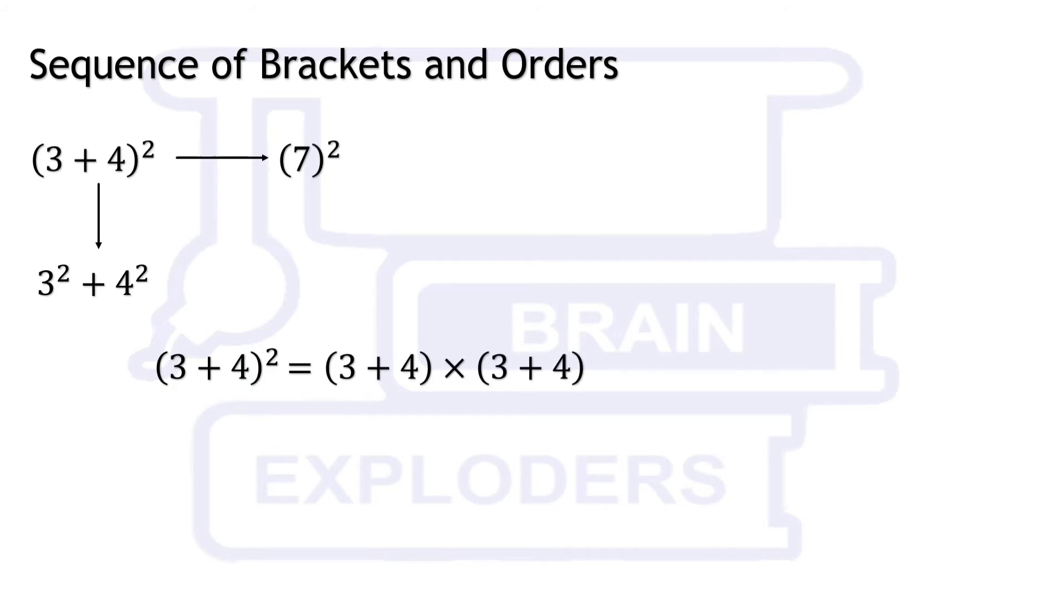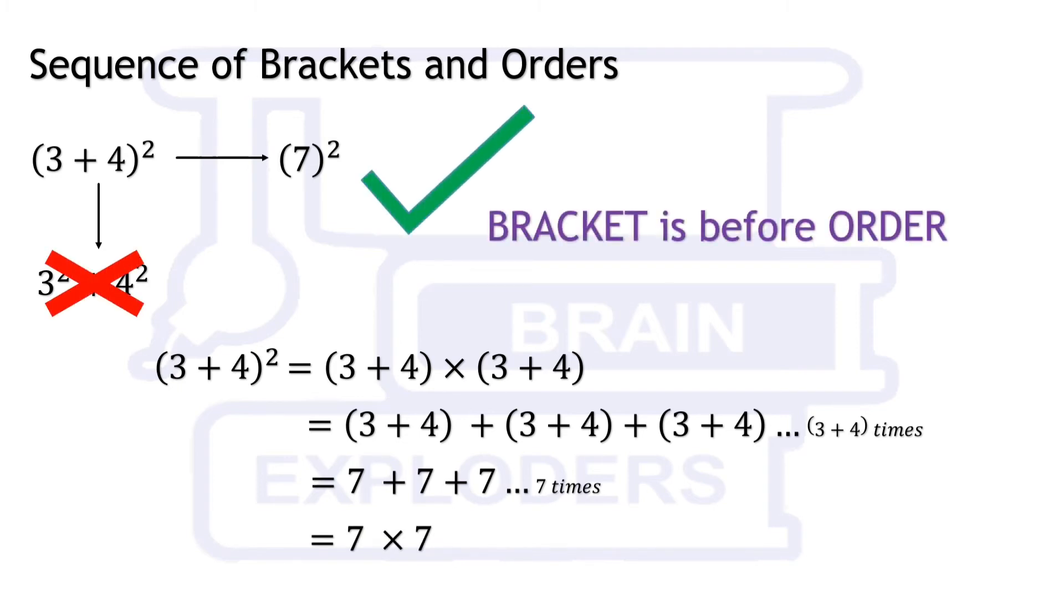If we don't know the sequence of BODMAS, even then we know that it must be correct. In this expression, the multiply sign shows that we have to add 3 plus 4, 3 plus 4 times, or we can say that 7 times 7. This logic is always true and that's why brackets are before orders.